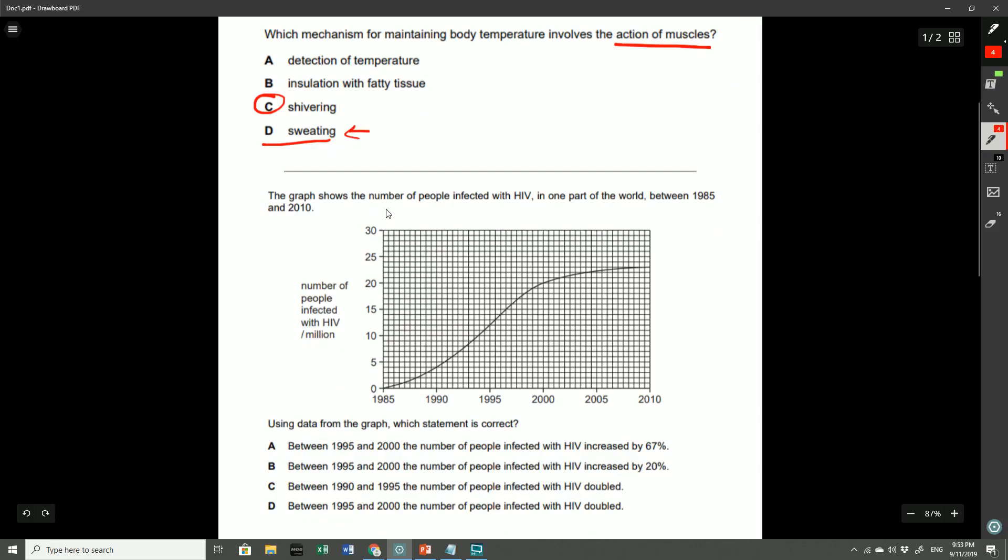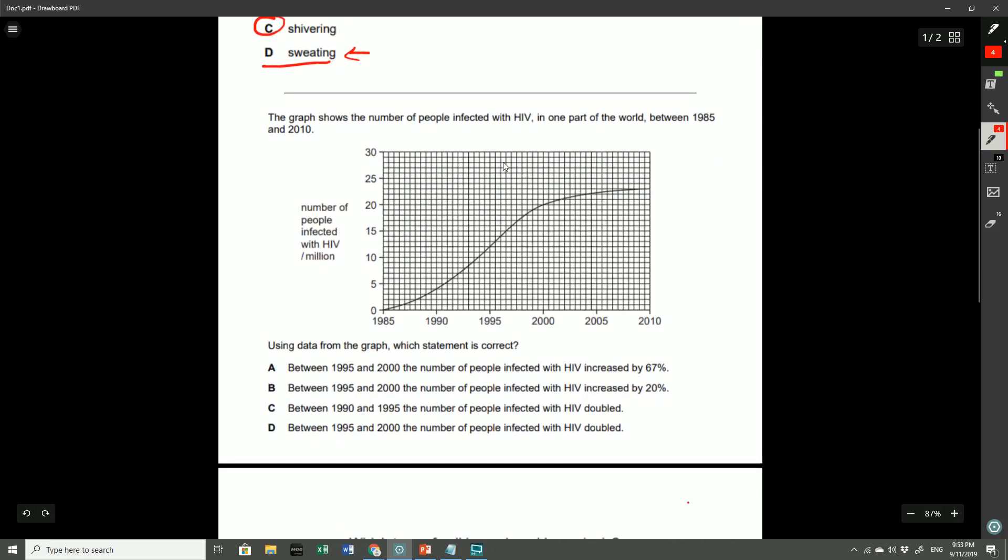This third question was challenging, apparently, and not many people got this correct. The graph shows the number of people infected with HIV in one part of the world between 1985 and 2010. Using this graph, which statement is correct? And here the answer was A.